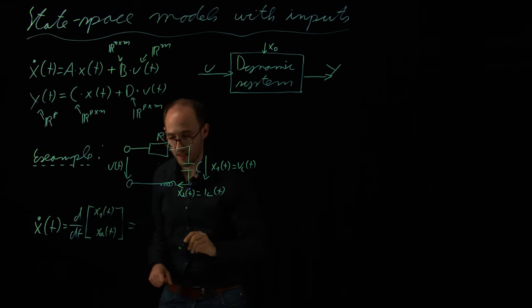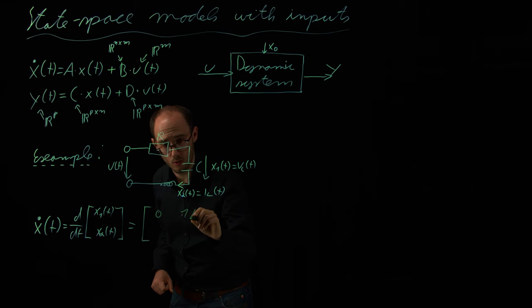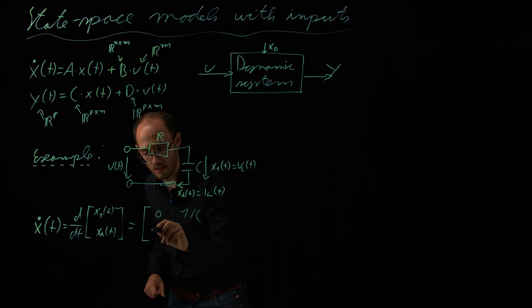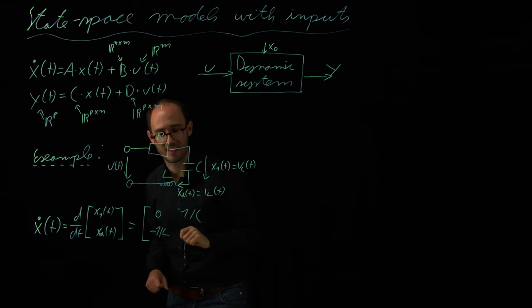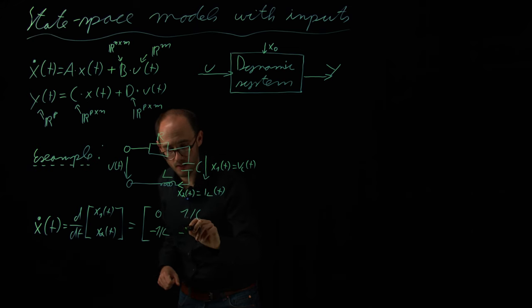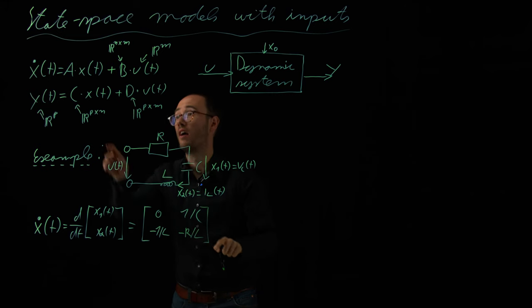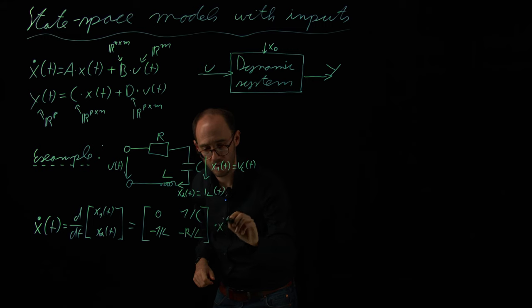And then, as a right-hand side, for this simple circuit, what we get is 0, 1 over c. So, this is here the capacitor. Values, the so-called capacitance. Minus 1 over L, which I did not write down until now. So, L is the inductance. So, the characteristic value of the inductor. And we get minus R over L. So, this would be then here our A matrix.